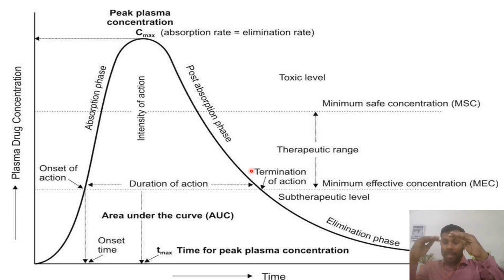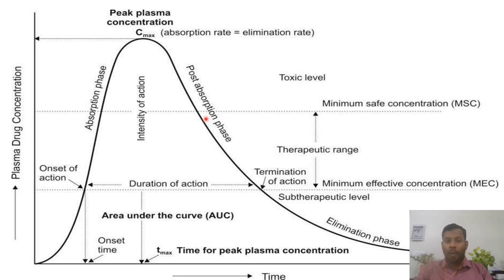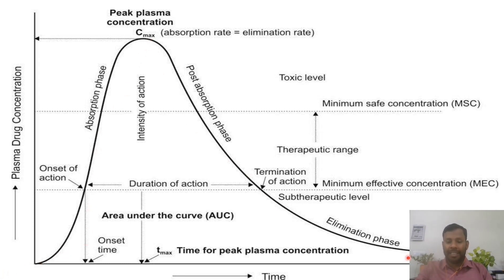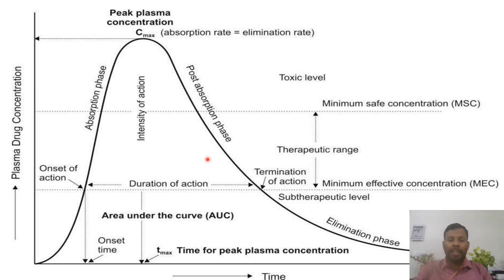But on the right side, if the rate of water going out is more than the rate of water coming in, the water level will decrease slowly. Here on the right side, rate of elimination is more than the rate of absorption, so the drug amount in plasma will decrease slowly. The graph will first increase to a highest point, then decrease. Now in this graph, I will show you various pharmacokinetic and pharmacodynamic parameters.